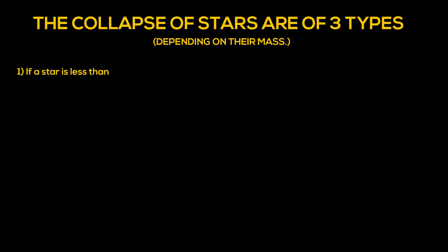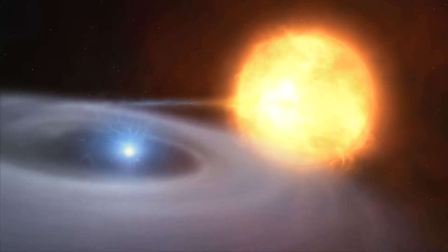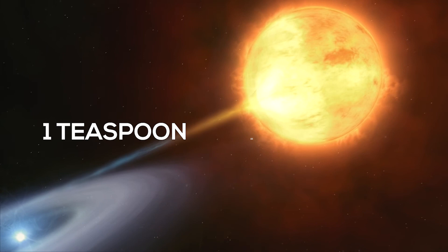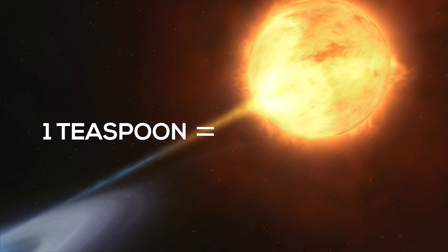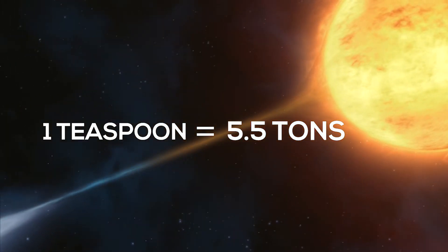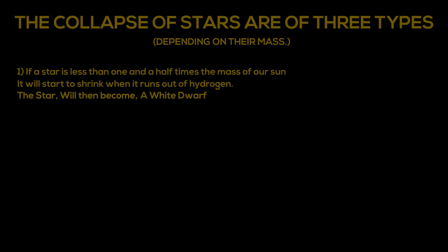If a star is less than one and a half times the mass of our sun, it will start to shrink when it runs out of hydrogen. The star will then become a white dwarf. White dwarfs, as the name suggests, are small stars that are white in color. A teaspoon of white dwarf matter weighs 5.5 tons — now that's heavy. This tells us that white dwarfs are extremely dense and heavy.